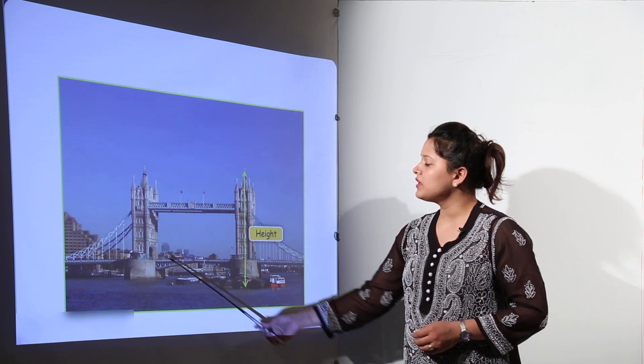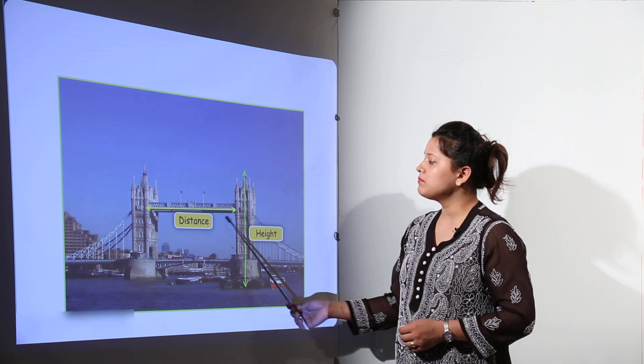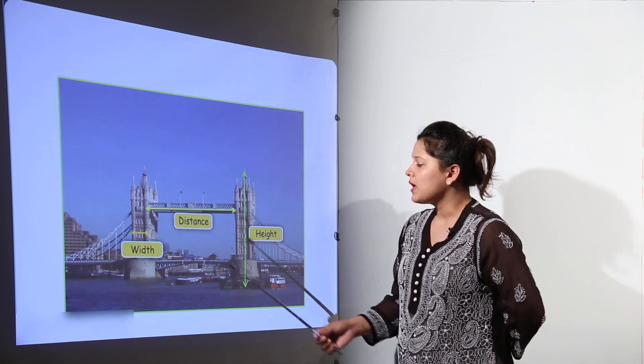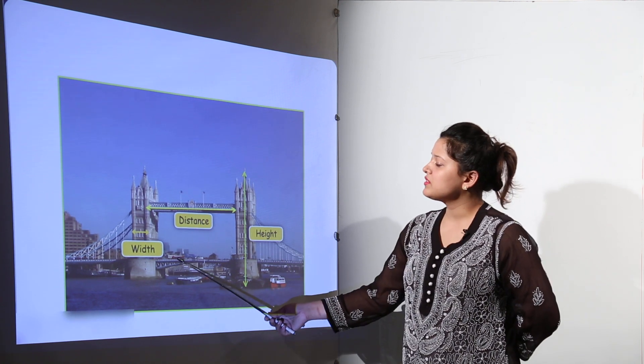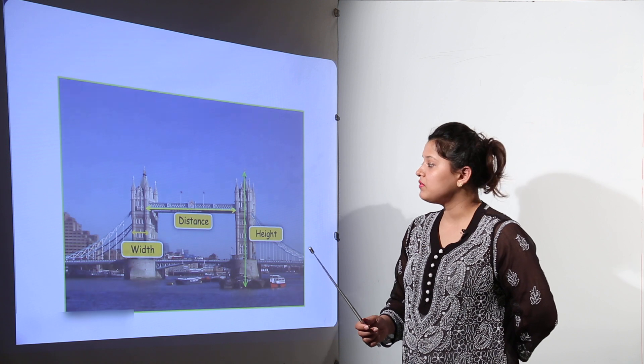What you see over here is a bridge. We can measure its height, we can measure its distance and we can measure its width as well. So how to measure these? We can measure these by the same units that we have learnt.